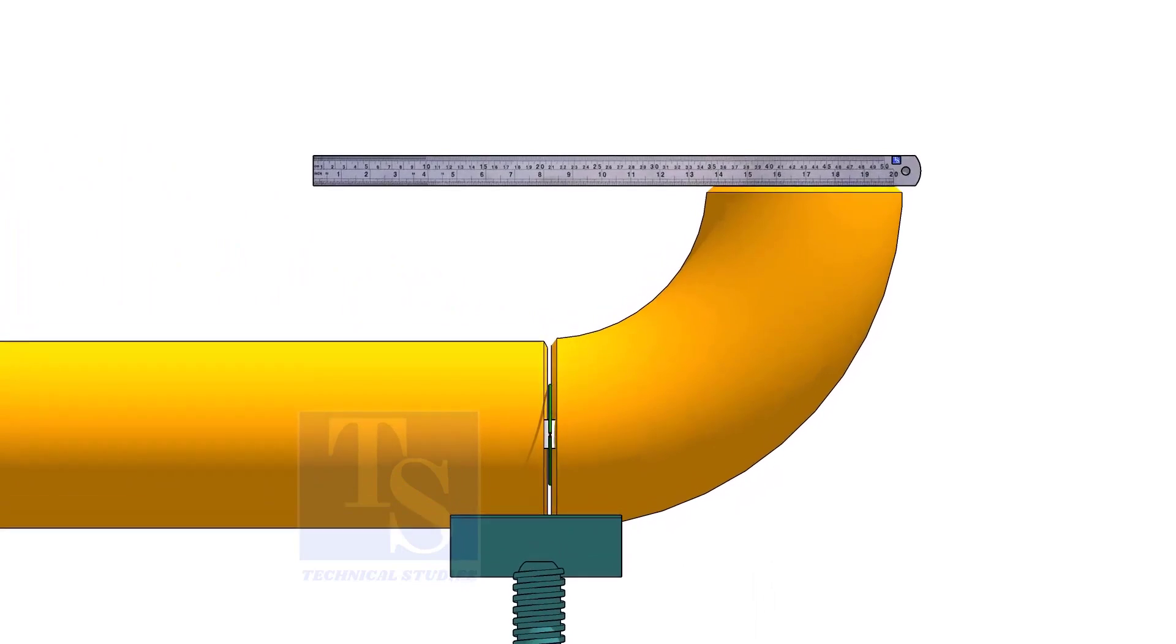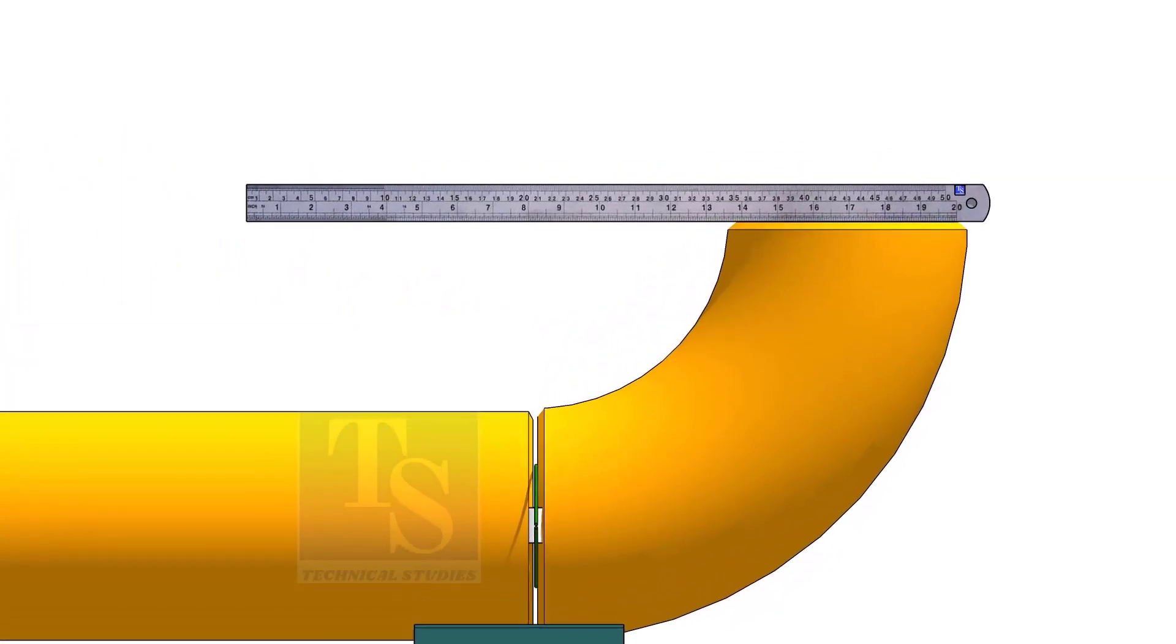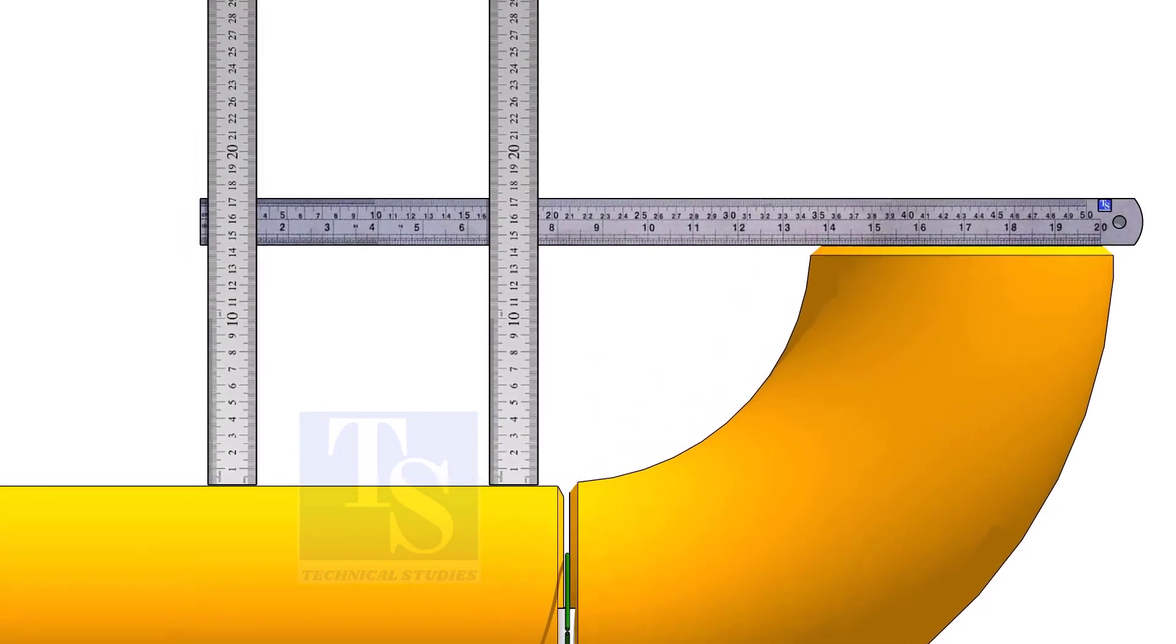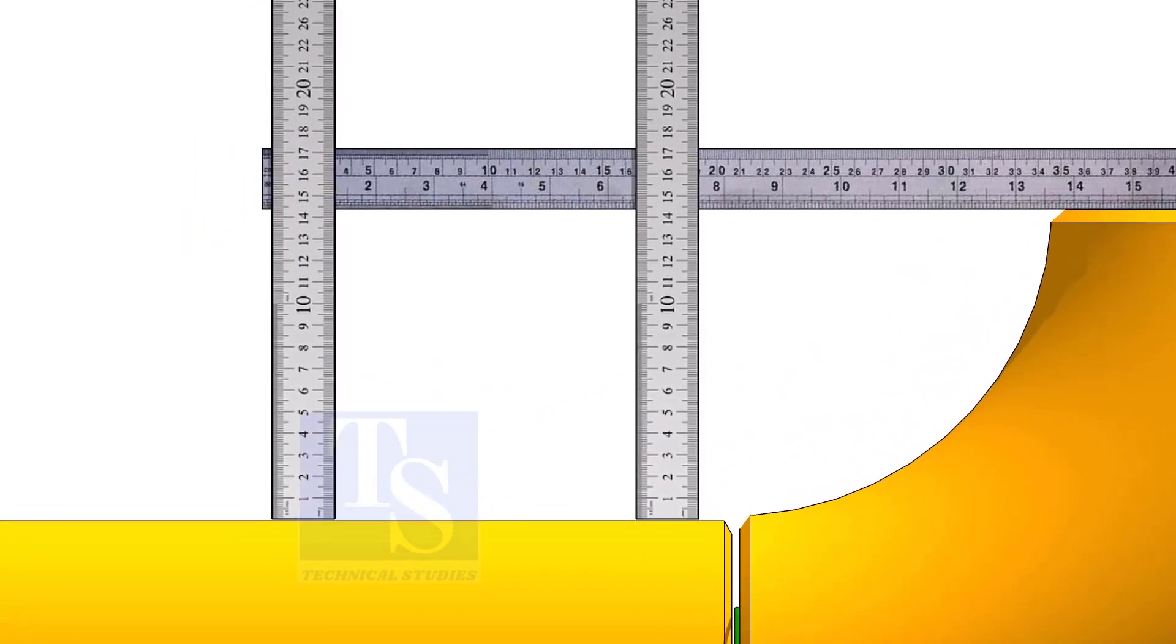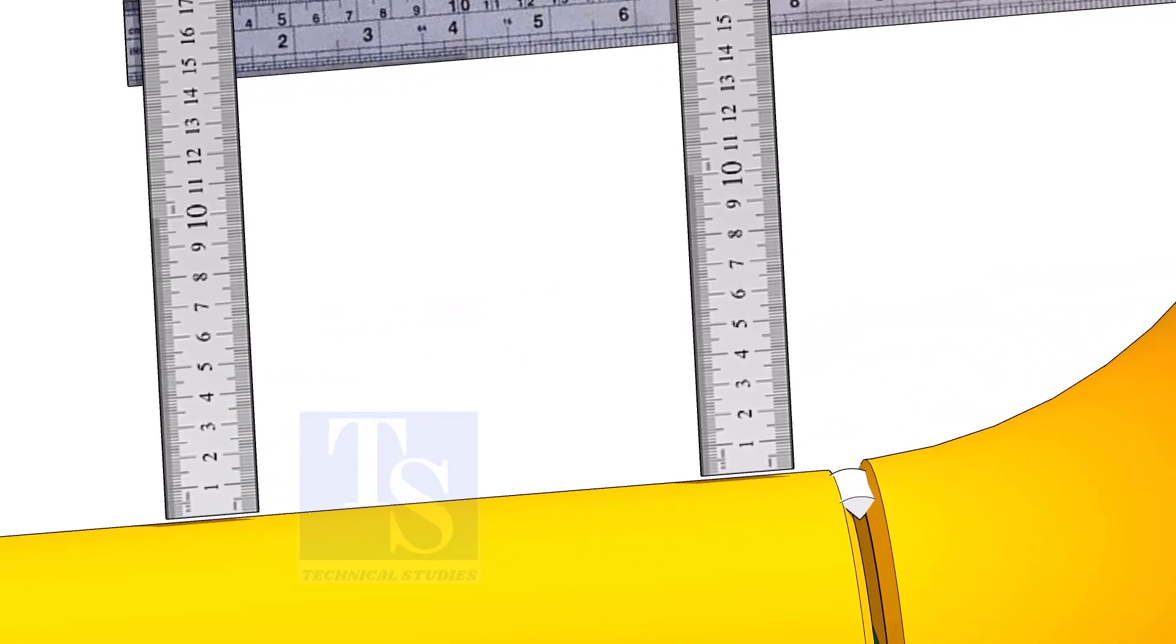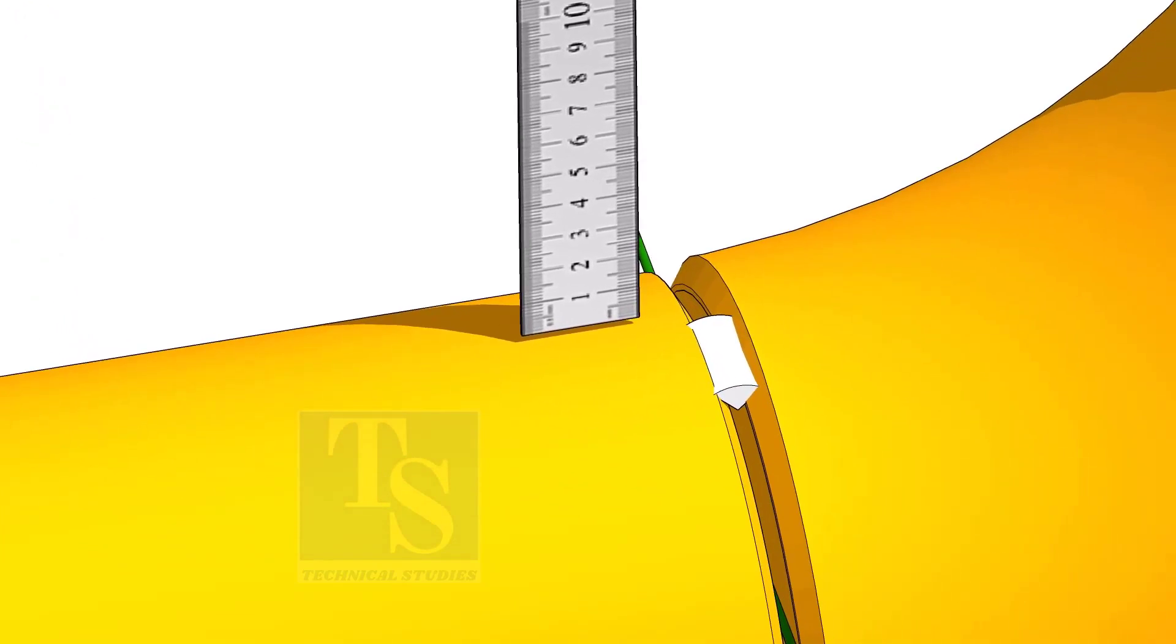Hold a scale on the top of the elbow and measure the distance. Tack weld on the top and bottom side of the joint.